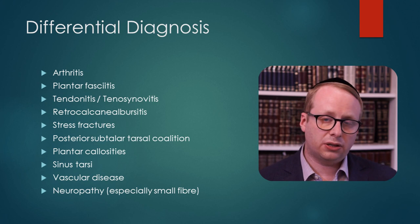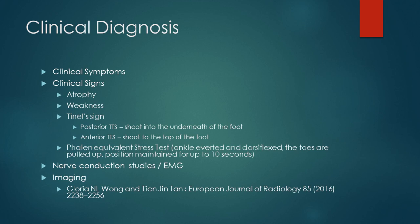Tarsal Tunnel Syndrome is primarily a clinical diagnosis and relies on the classical constellation of clinical symptoms as described, and clinical signs such as atrophy and weakness of the muscles, and the Tinel sign — for Posterior Tarsal Tunnel this will be shooting discomfort into the underside of the foot, and for Anterior Tarsal Tunnel shooting on the top of the foot. There is also a Phalen equivalent stress test where we evert the ankle, flex it, and pull up the toes to maximise stress on the tibial nerve, maintaining that position for up to about 10 seconds, which should reproduce symptoms in approximately 85% of patients.